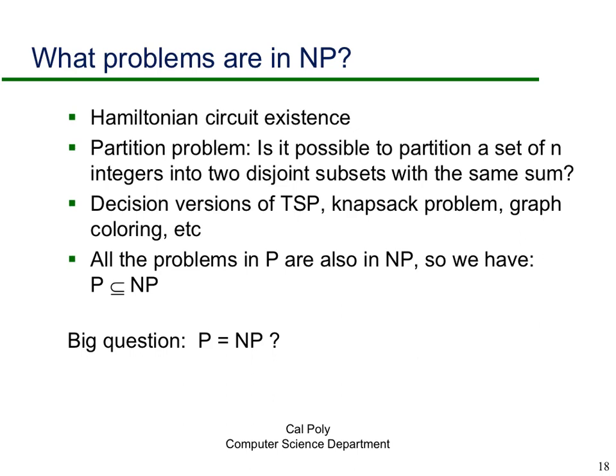What problems are in NP? All problems in P are also in NP. Additionally, the Hamiltonian circuit existence problem — does there exist a cycle that visits every vertex in a graph exactly once? — is in NP. Another NP problem is the partition problem: can a set of N integers be partitioned into two disjoint subsets with the same sum? This is related to the knapsack problem. Decision versions of traveling salesperson, knapsack, and graph coloring are also in NP.